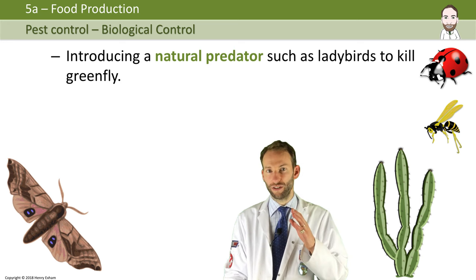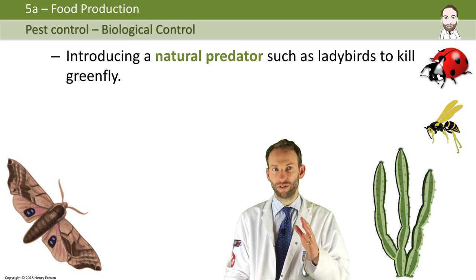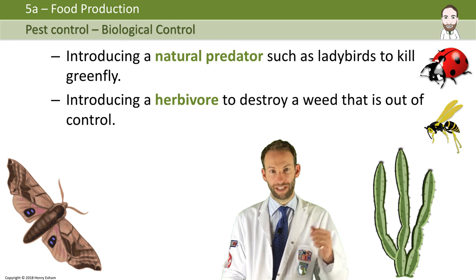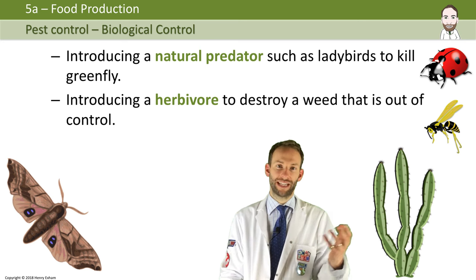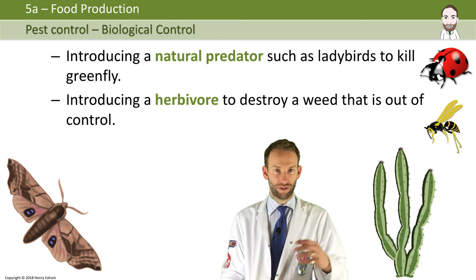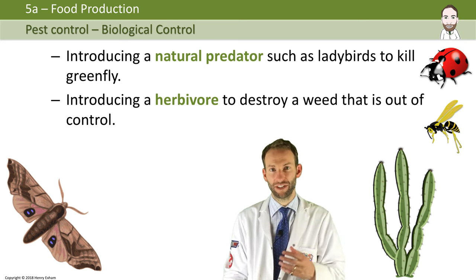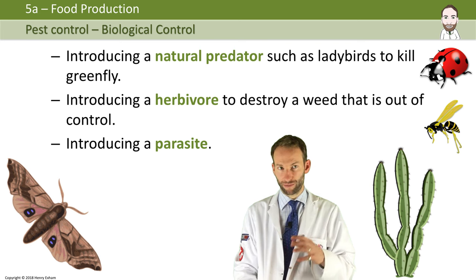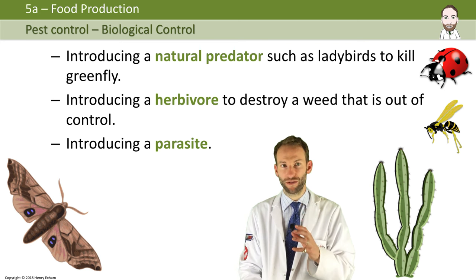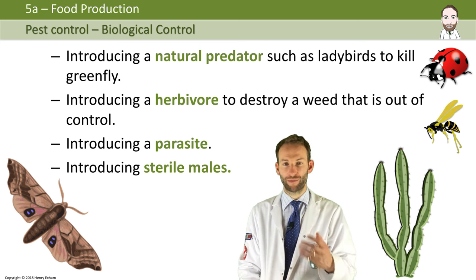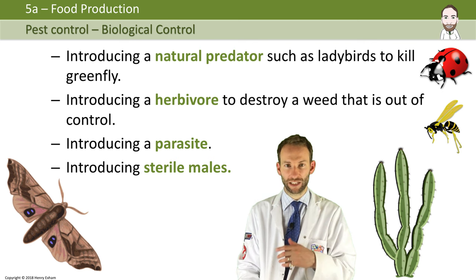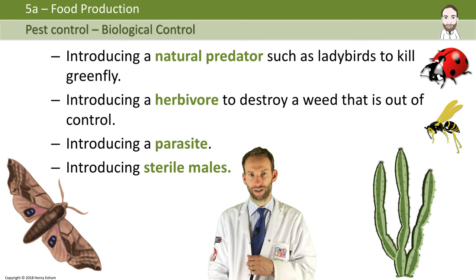You might use a herbivore to destroy a weed that is out of control — something that eats that plant, you might introduce them. You might use a parasite, or you could introduce some sterile males. These are males that, when they mate with the females, don't produce any offspring, and therefore the pests will die out after a generation or two.